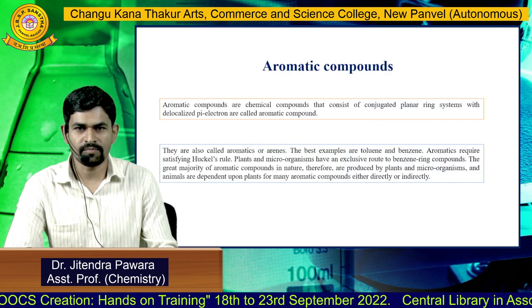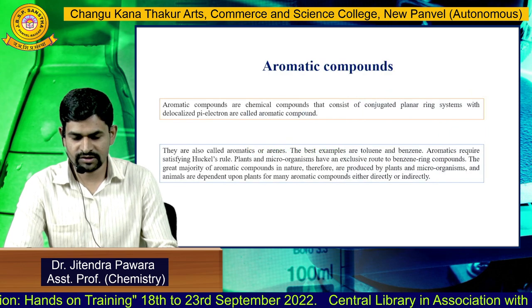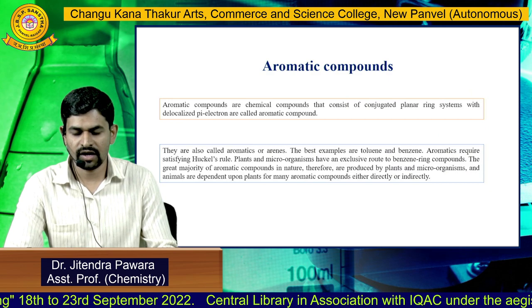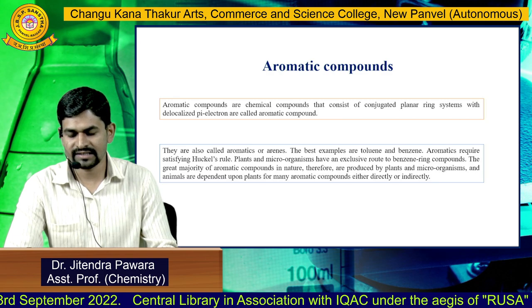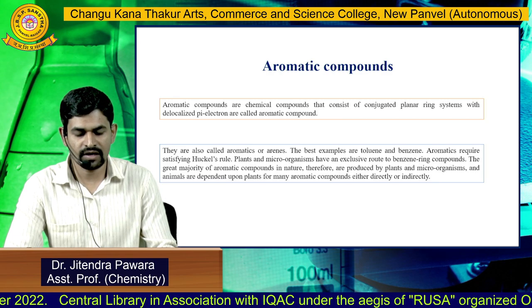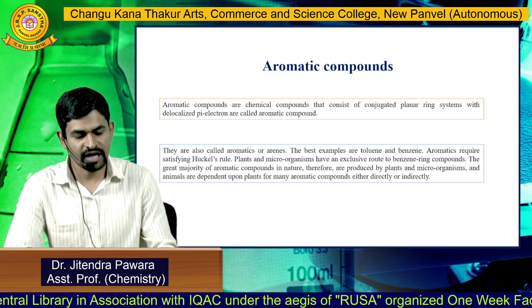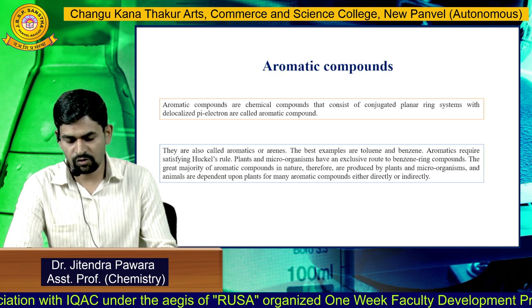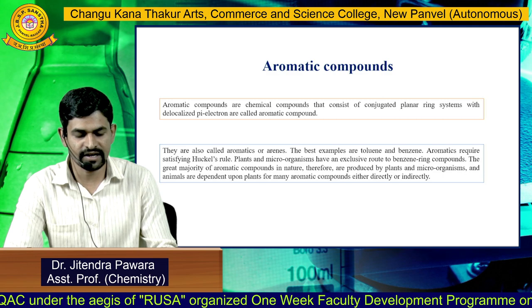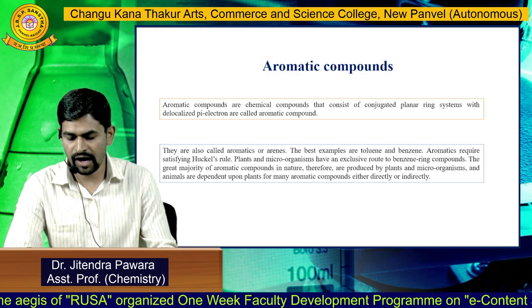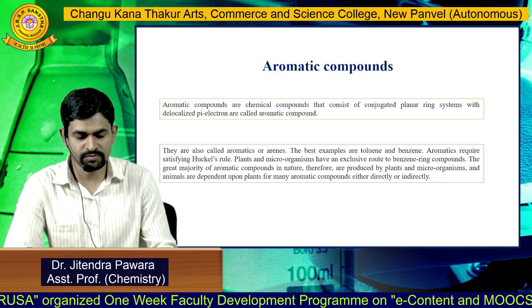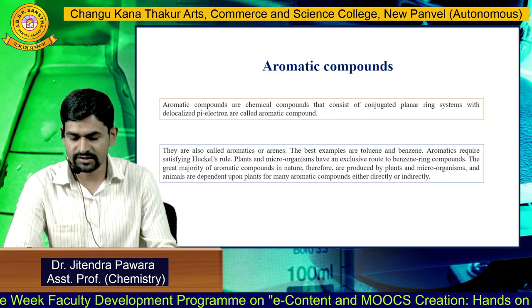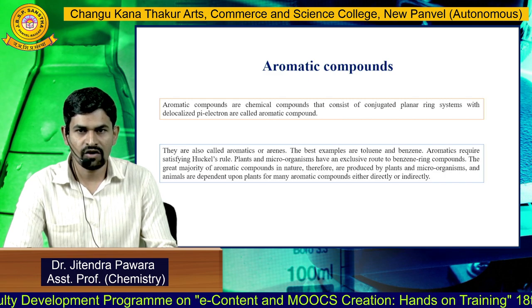What is meant by aromatic compound? Aromatic compounds are chemical compounds that consist of a conjugated planar ring system with delocalized pi electrons, and they are also called as aromatics or arenes. The best examples are toluene and benzene. This aromatic is required to satisfy Huckel's rule. Plants and microorganisms have exclusive routes to benzene ring compounds, and the great majority of aromatic compounds in nature are therefore produced by plants and microorganisms, with animals dependent upon plants for many aromatic compounds, either directly or indirectly.